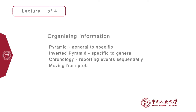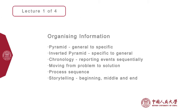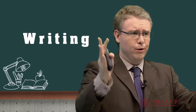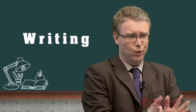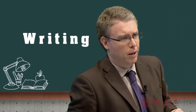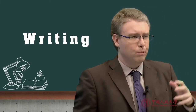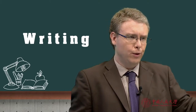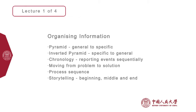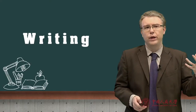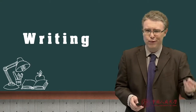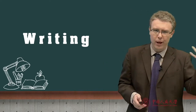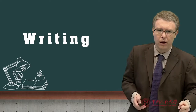In terms of organising our information, there are a number of different strategies we can use. We can use a pyramid — from specific all the way down to the most broad. We can invert the pyramid and start with the most general and go towards the most specific. We can use chronology — putting things in time order. We can move from problem to solution. We can document a process or sequence, starting at the beginning and moving through to the end. Finally, we can structure our emails as a story — with a beginning, middle, and end.